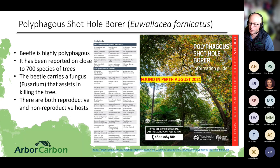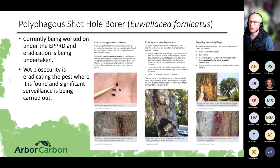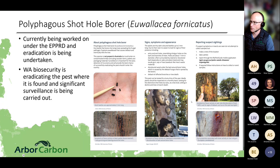The spread of polyphagous shot hole borer is relatively slow — only about 100 meters per year from each infested tree — because the insect is tiny, around 1–2 millimeters. However, there is concern about inadvertent spread through arborist work. Signs to look for include small exit holes, white frass evident around the tree, bleeding cankers, and staining under the bark where the Fusarium fungus is eating through the tree. Anyone wanting more information should reach out for information sheets.